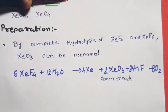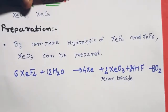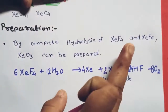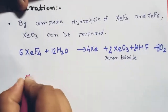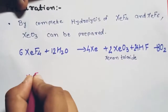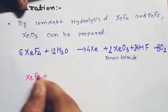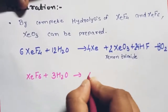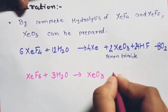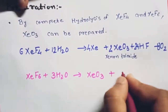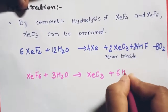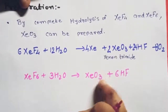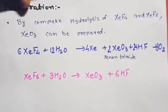XeO₃ is also formed from xenon hexafluoride by hydrolysis: XeF₆ + 3H₂O → XeO₃ + 6HF. So XeO₃ can be formed by two methods.